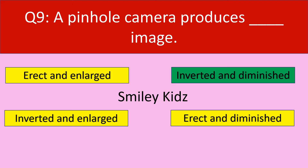The correct answer is Inverted and Diminished. A pin hole camera produces an Inverted and Diminished image.